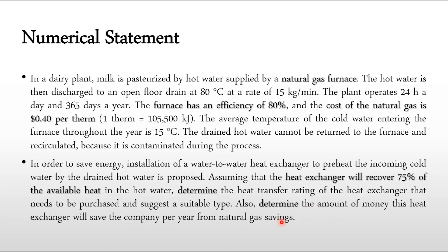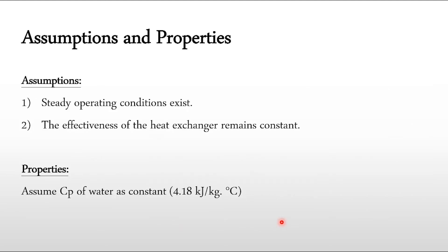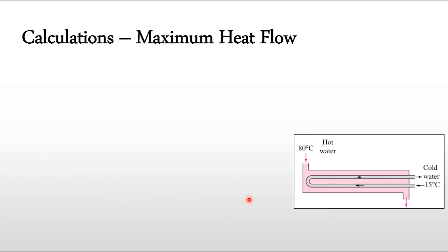There are some assumptions and properties. Assumption one: steady-state conditions exist. Assumption two: the effectiveness of the heat exchanger remains constant, representing the 75% energy recovery defined in the problem statement. For properties, assume the specific heat cp of water is constant throughout the process at 4.18 kJ/kg·°C.